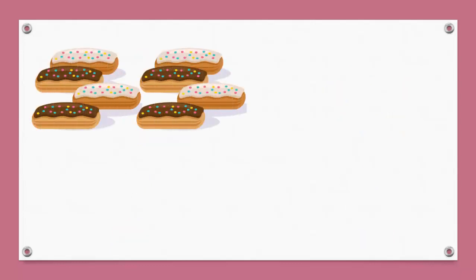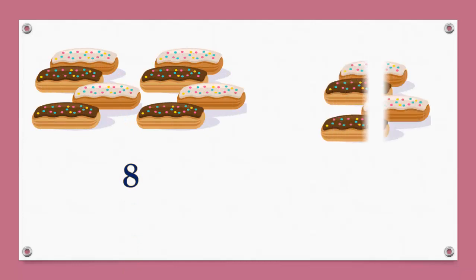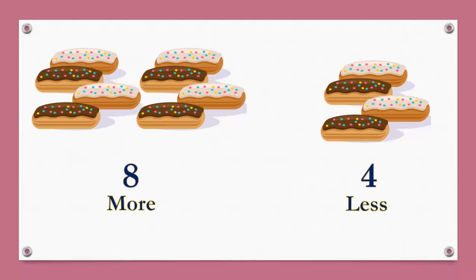Now here are 8 cakes and here are 4 cakes. Which number is small or less? Yes, 8 is more and 4 is less. That means 8 is a big number and 4 is a small number.